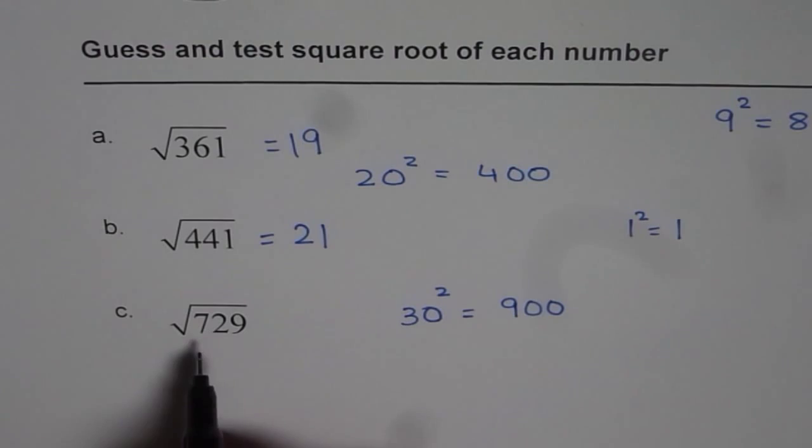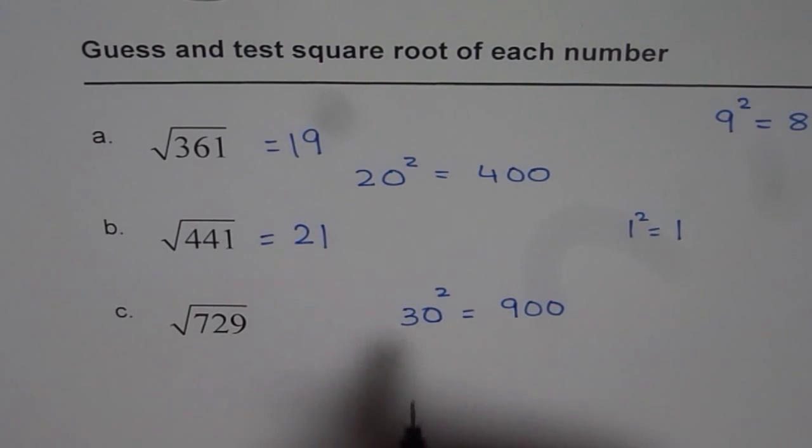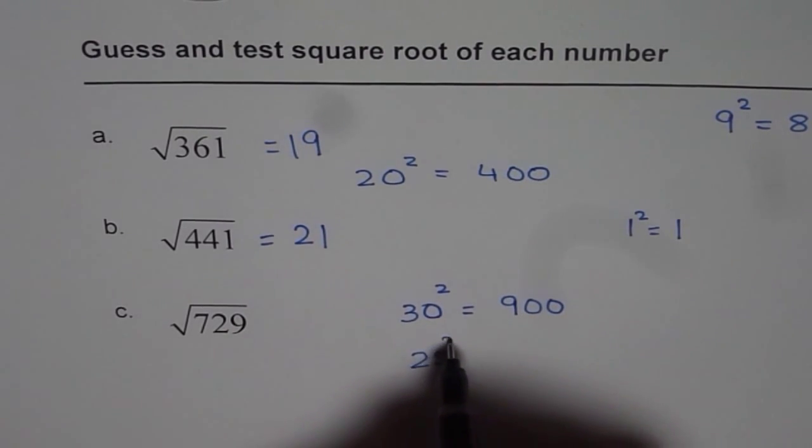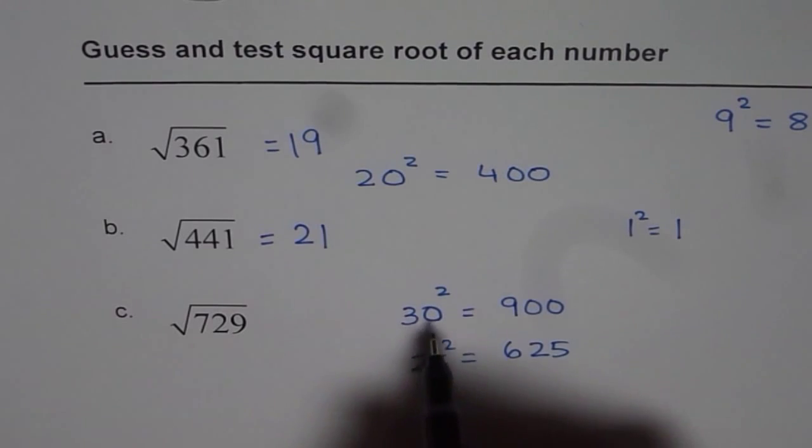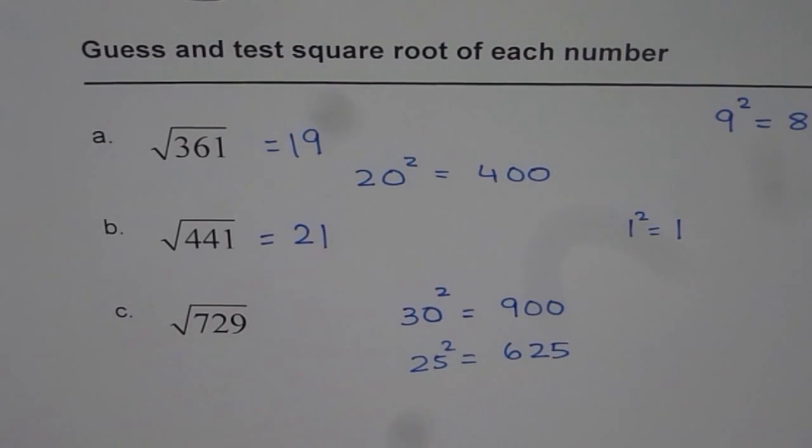So 30 square gives us 900. So it is less than 30 square, right? And it is actually more than 25 square. 25 square is 625. These are few squares which if you know, it is good. So what we find here is that 729 is closer to 30 and therefore this should be in the 20s, higher 20s.